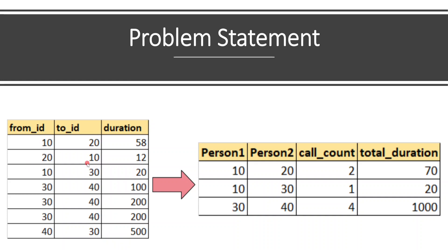This is the only tricky point here. We have to start our analytical thinking: how can we explain to the SQL engine that both combinations are the same? We need to find a way so that SQL engine understands that 10,20 and 20,10 are the same, or 30,40 and 40,30 are the same. That is the reason this is classified as medium complexity.